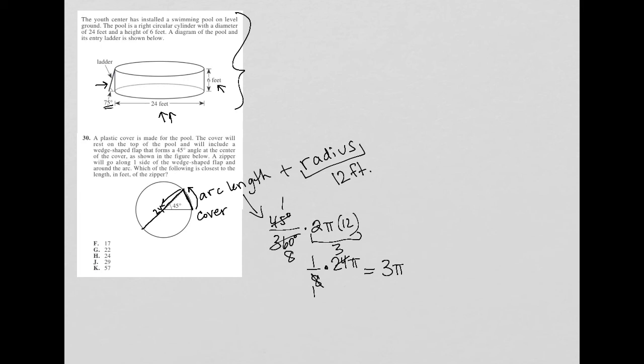So 3 times π, I'll just use 3.14, which is basically 3 times 3.14, which is 9.42. So now I have 9.42 from the arc length plus the 12 from the radius part of the zipper.